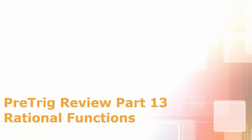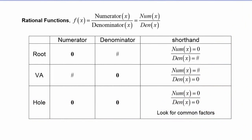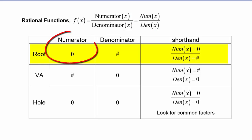In the pre-trig review part 13, we're going to study rational functions. We say a function is a rational function when there is a function living in the numerator and another function living in the denominator. For the purposes of this review exercise, we're going to abbreviate this as numerator of x over denominator of x.